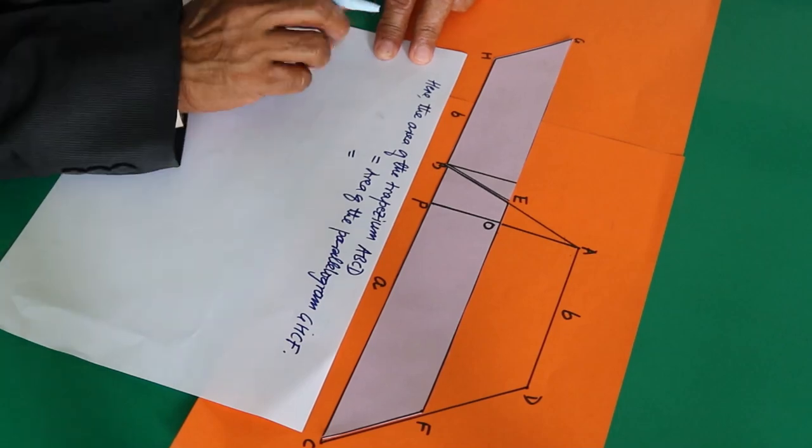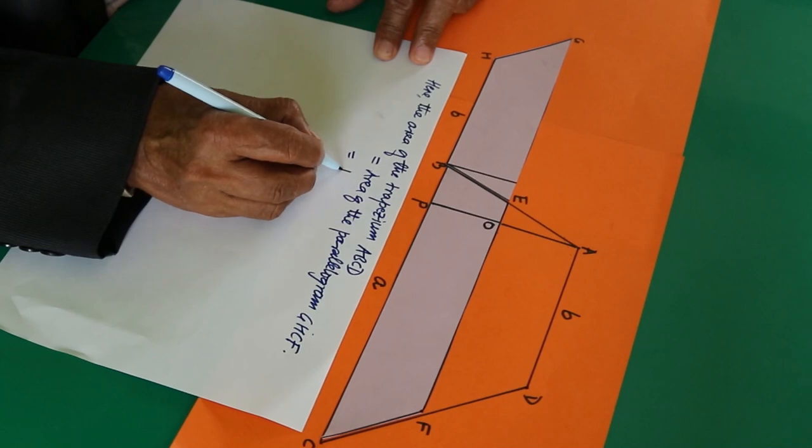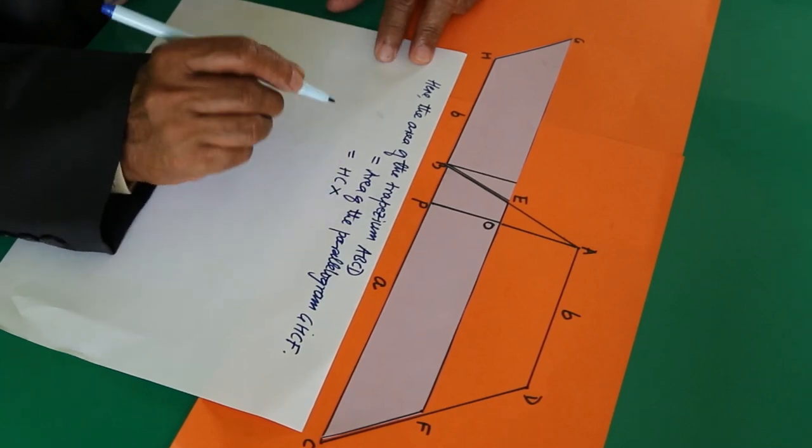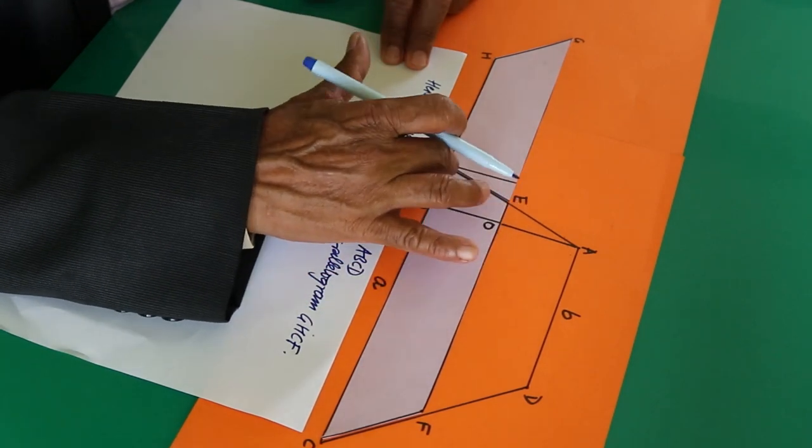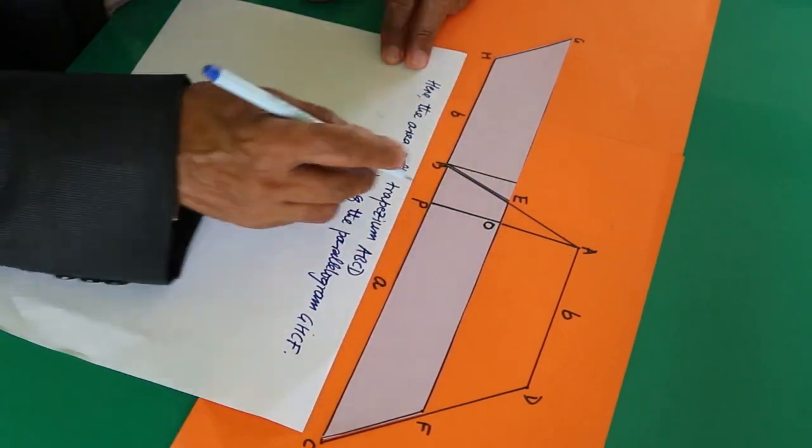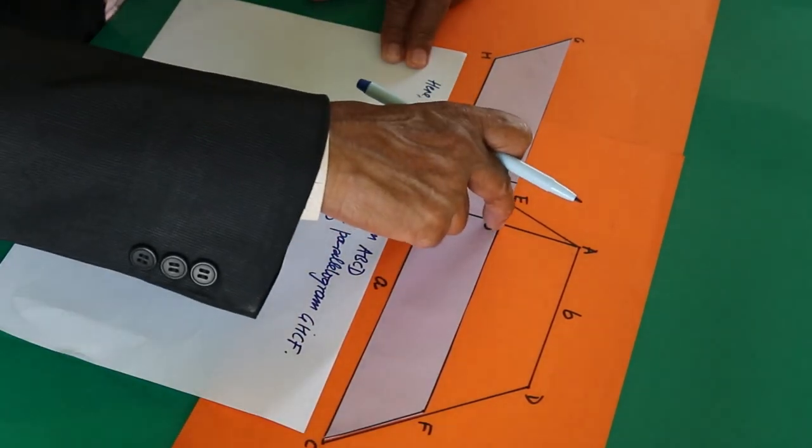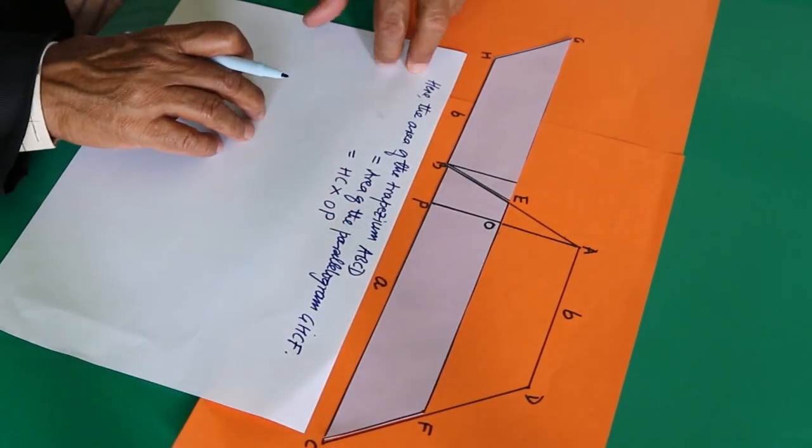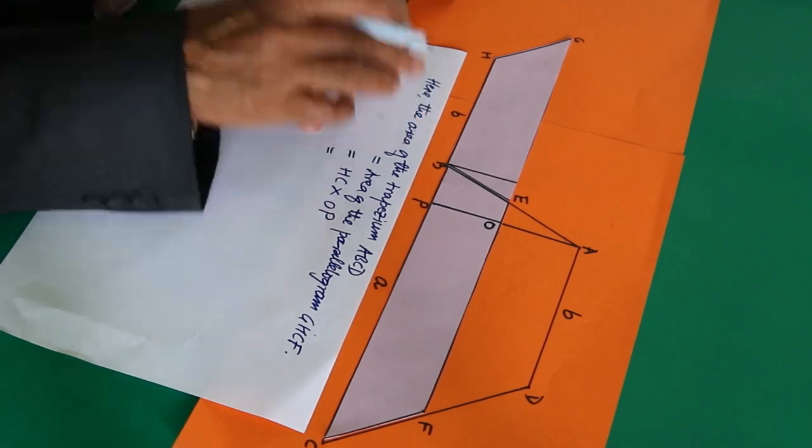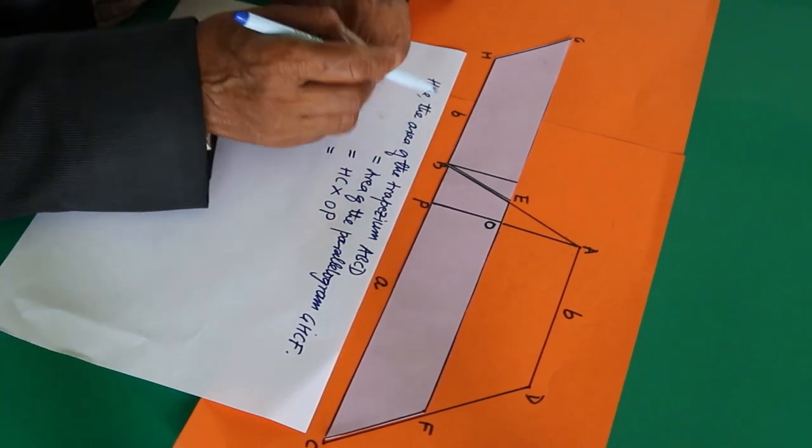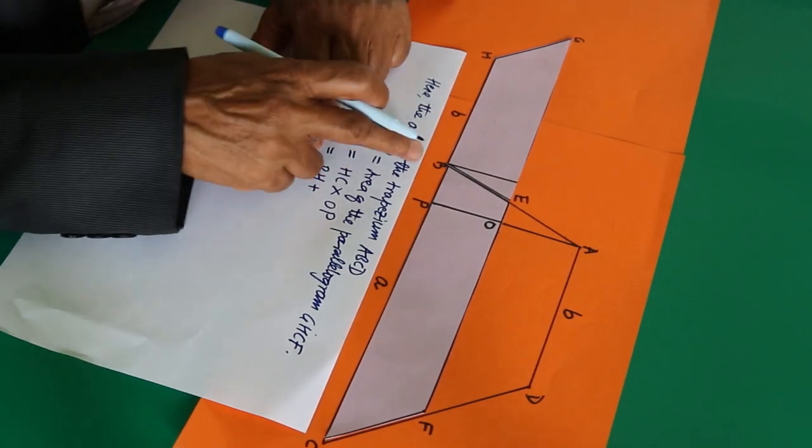Area of parallelogram is base times height. SC is the base times height. You can take any one of them, this one or that one. Let's write this as OP. Base of the parallelogram times height. This base is the sum of BH plus BC.